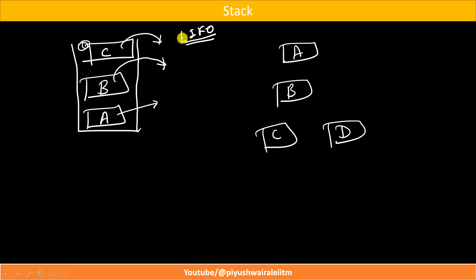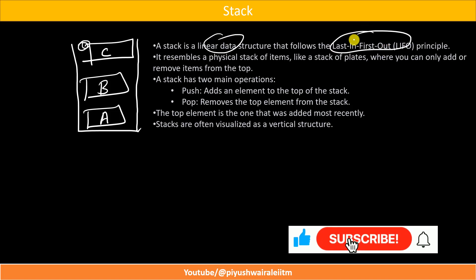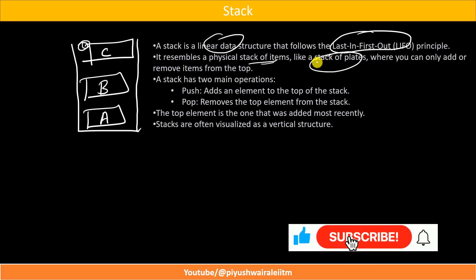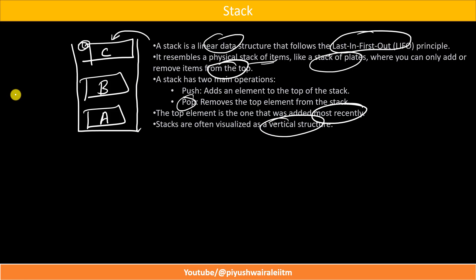Stack is basically a linear data structure that follows the Last In First Out principle. It resembles a physical stack of items — like a stack of plates — where you can add or remove items from the top. The stack has two main operations: push (add an element to the top of the stack) and pop (remove the top element from the stack). The top element is the one that was added most recently. I hope you understand the concept of stack and the Last In First Out principle.